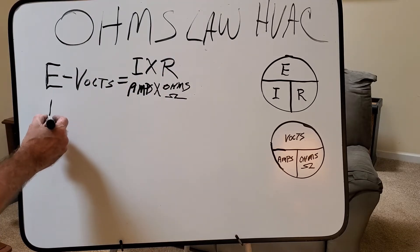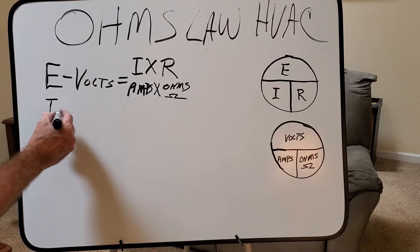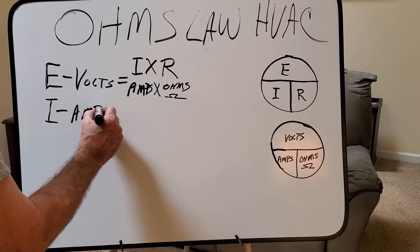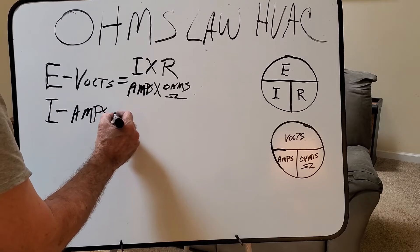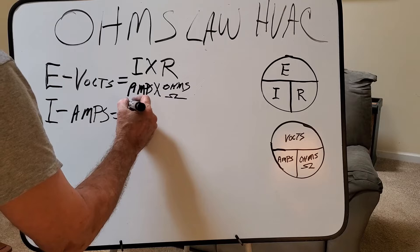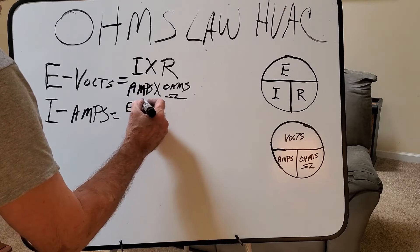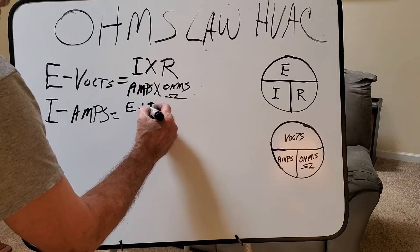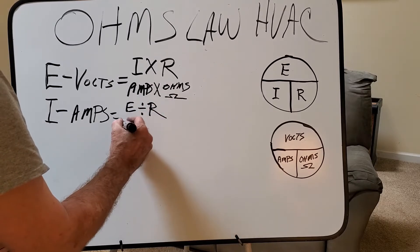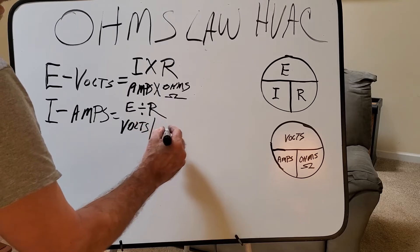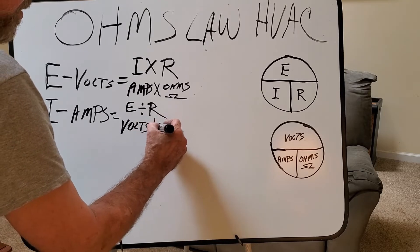Now we're going to look for intensity or amps. And that's going to be E divided by R, or volts divided by resistance.